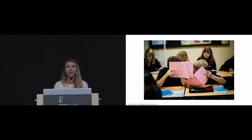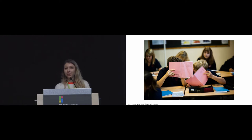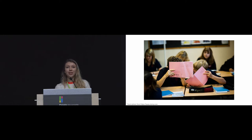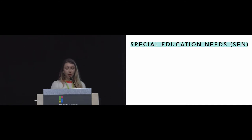I'd like you to imagine a typical mainstream secondary classroom — how are the learners learning, how are they interacting with each other and the material? Now imagine a similar classroom but this time a secondary special education needs classroom. How are the students learning, how are they interacting? What do you visualize as being the core differences between special education needs classrooms and mainstream classrooms?